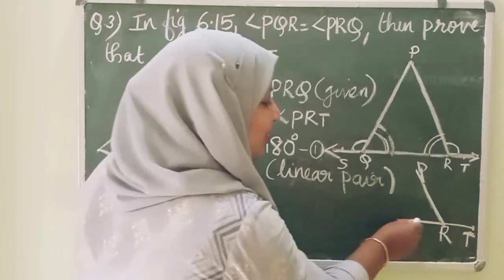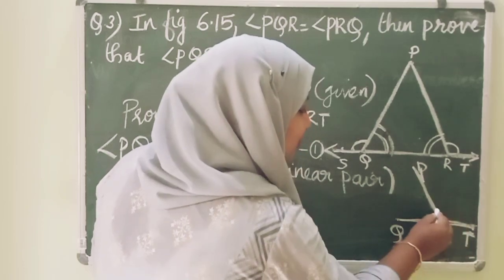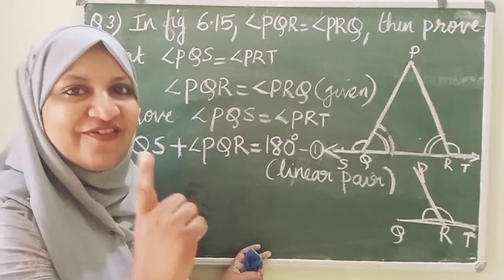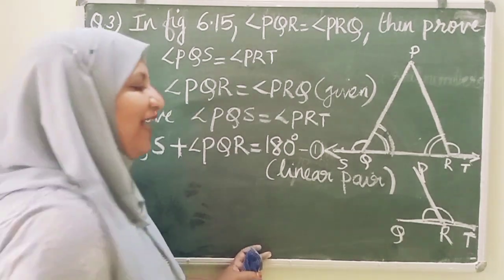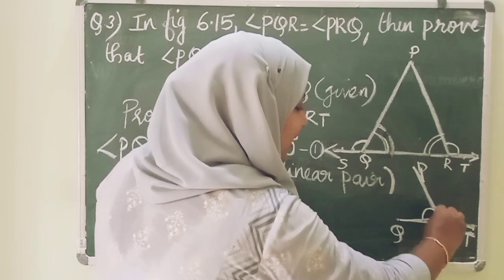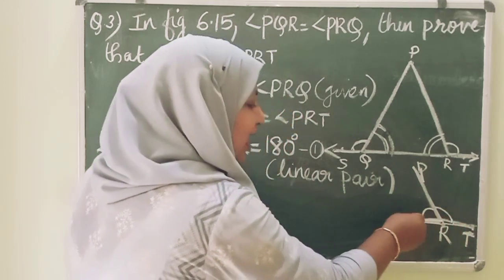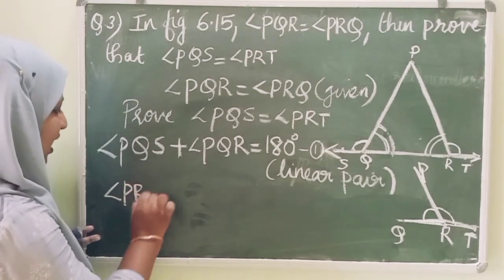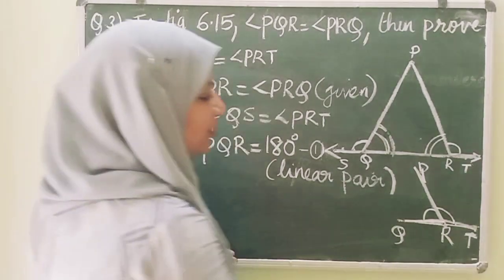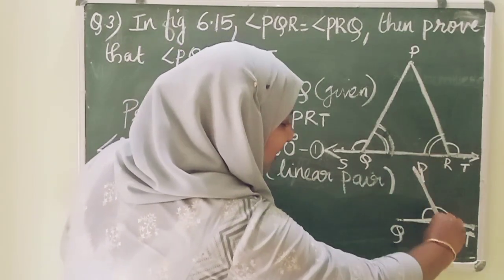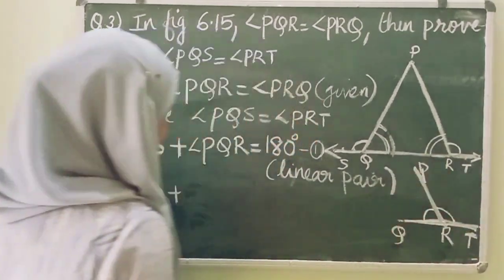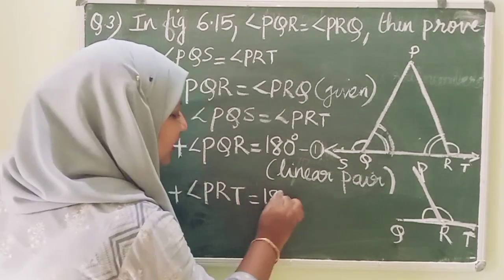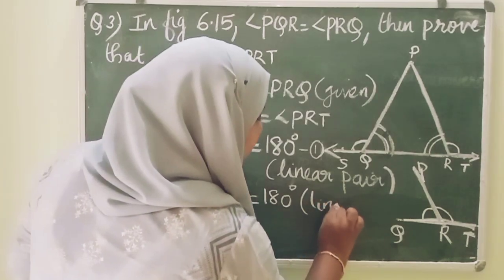On the straight line, if you cut it, two adjacent angles are formed. Because this is the sum of 180 degrees — linear pair. So angle PRQ plus angle PRT is equal to 180 degrees. The reason is linear pair. That is our second equation.